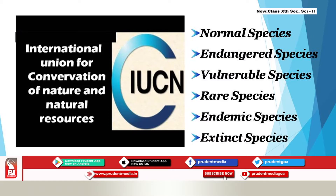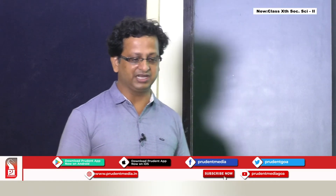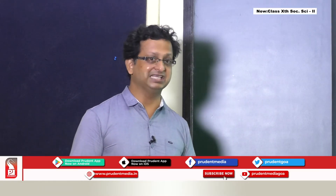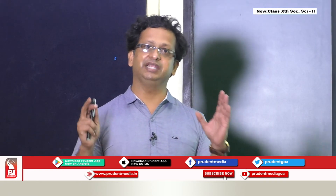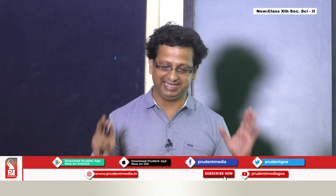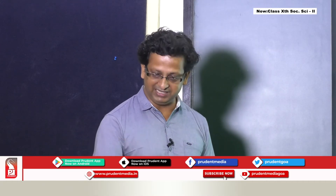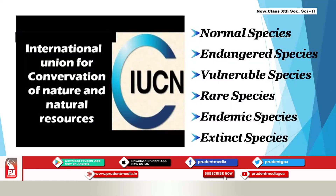Accordingly, the International Union for Conservation of Nature and Natural Resources — IUCN — has classified the species of plants and animals into different categories: normal species, endangered species, vulnerable species, rare species, endemic species, and extinct species.